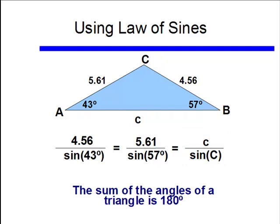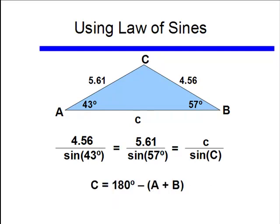But what I can remember is that the sum of the angles of a triangle is always equal to 180 degrees, so by using this, I can find what that angle C is. It's just 180 degrees minus the sum of A plus B. In this case, C is equal to 80 degrees.